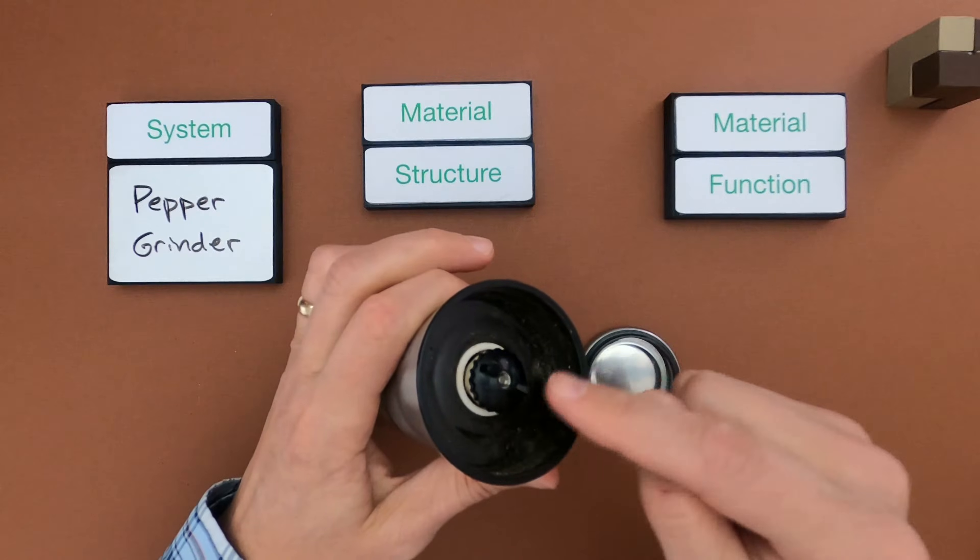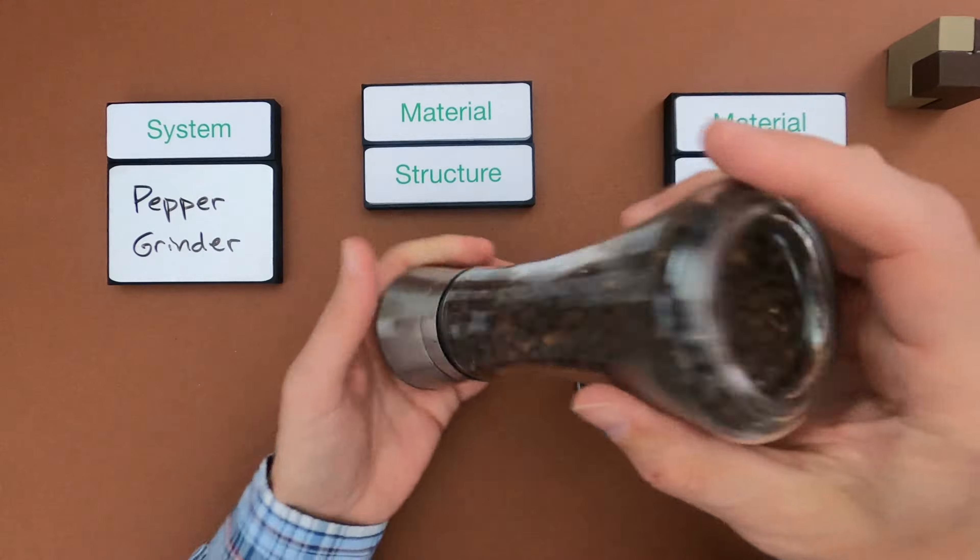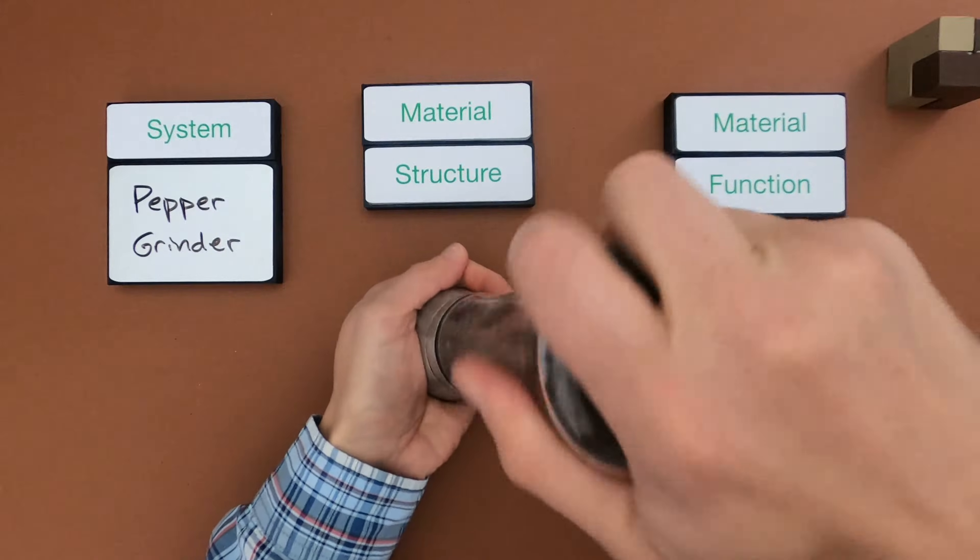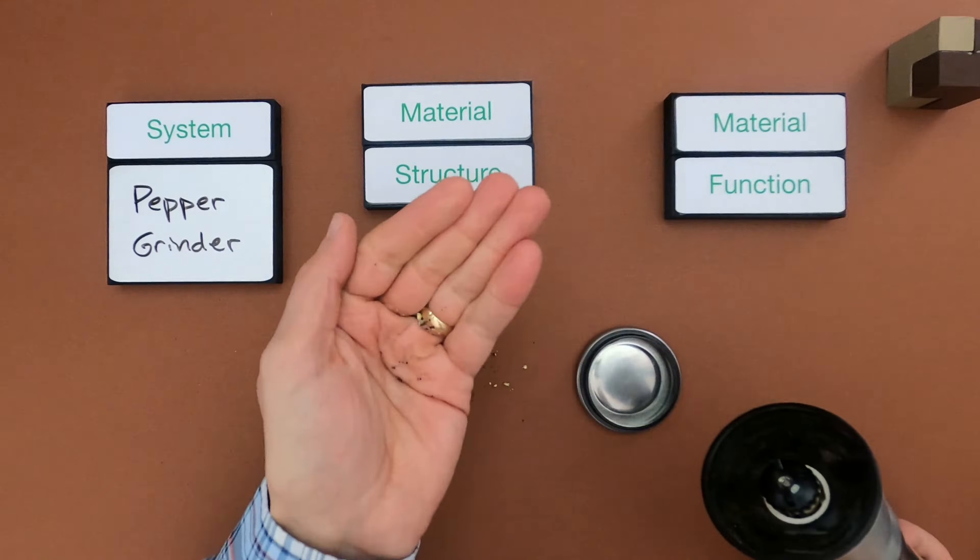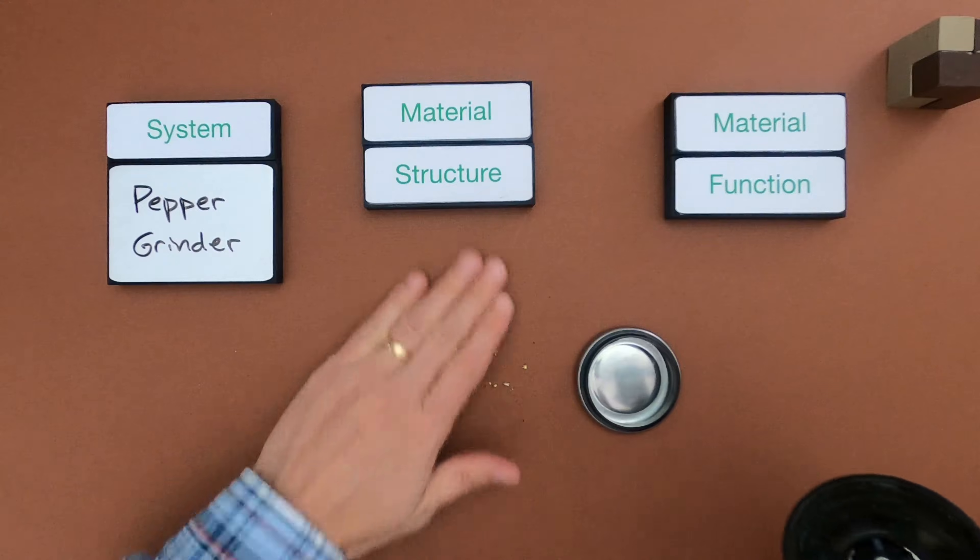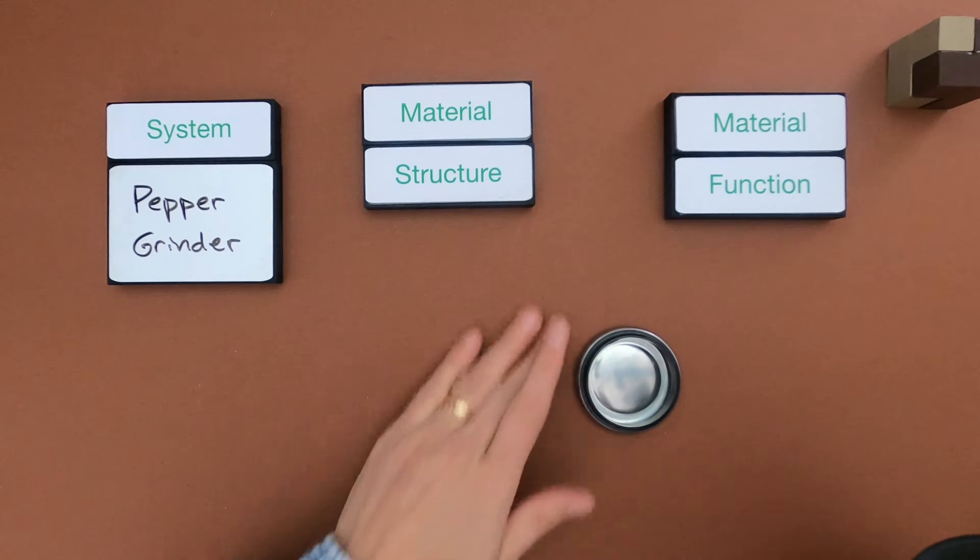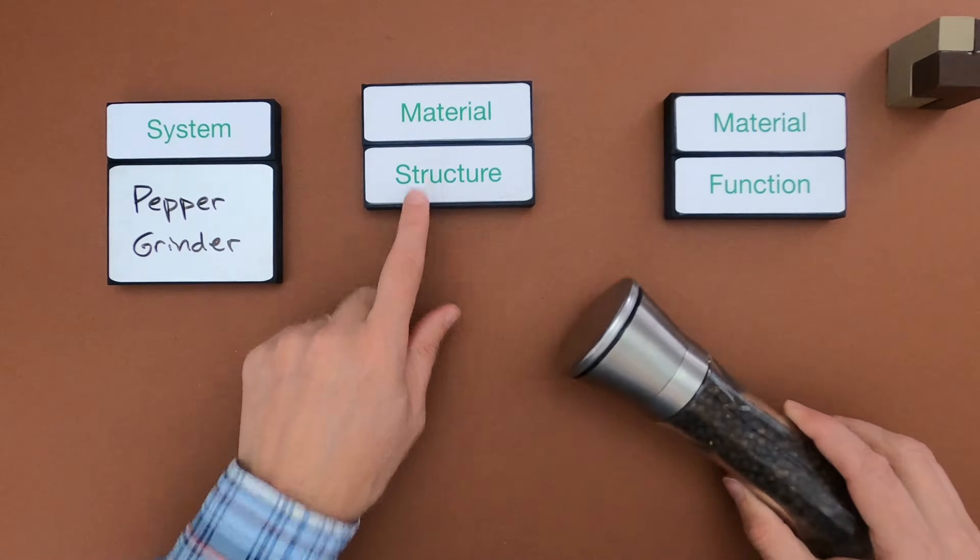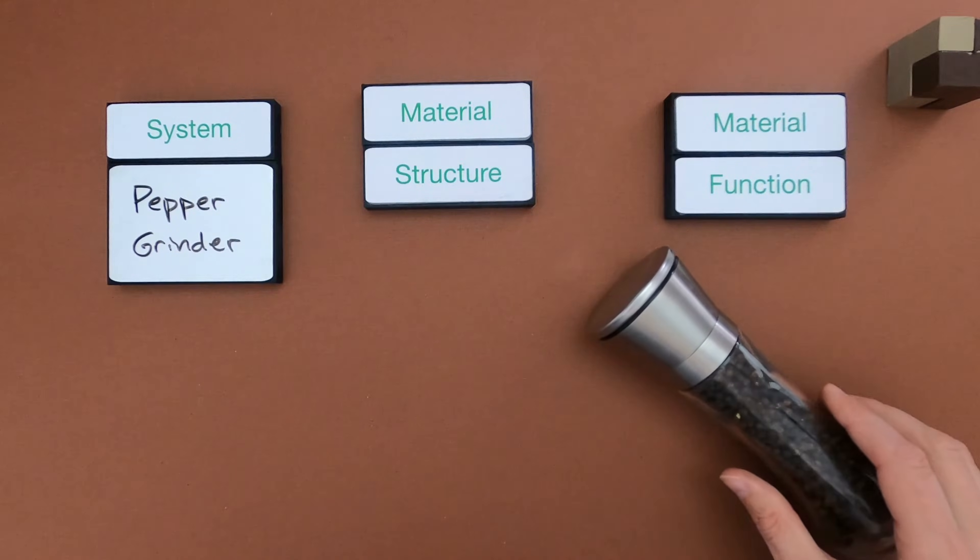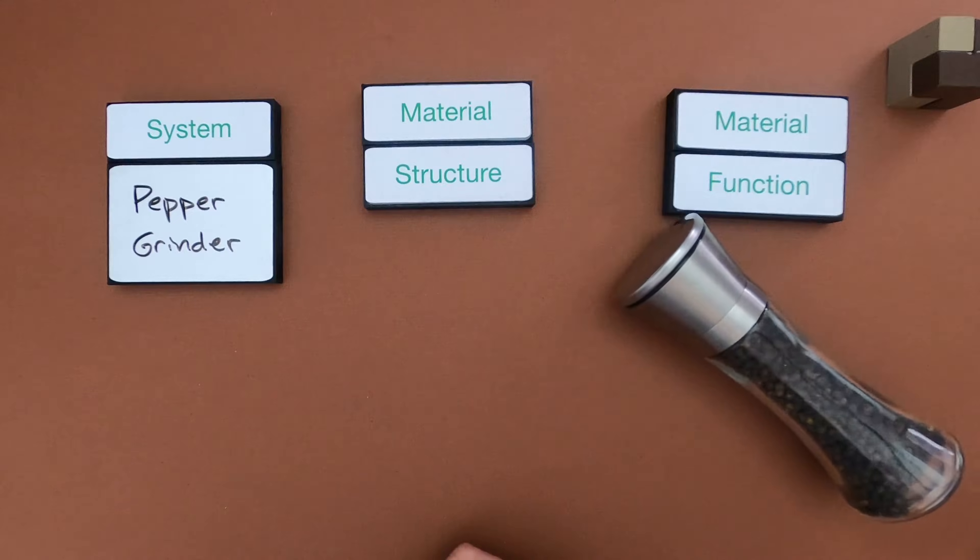You can see on the inside there's a screw, but there's a blade inside here. So when I turn it upside down and twist it, so what I'm getting, you can see, is I'm getting some pepper coming out. So what we're going to do now is we're going to have you do some thinking around material structure and material function. The three different materials that I see here, let me list those out for you.